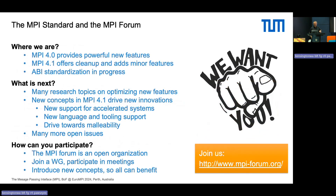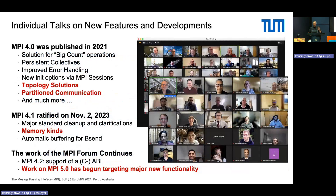To summarize: MPI 4.0 has really important features — please start using them and give us feedback. MPI 4.1 offers some minor features and cleanup. MPI 4.2 should arrive in the near-to-medium future with the ABI. There are still many features we'd like for accelerated systems, new languages, and malleability. Please join us in the forum — joining just means coming to the calls. We'll now go into more detailed talks on topology, partition, and memory kinds. Hugo will do the first part on hardware topologies.